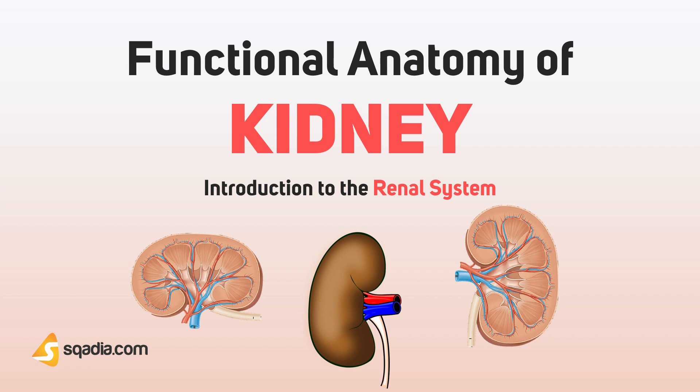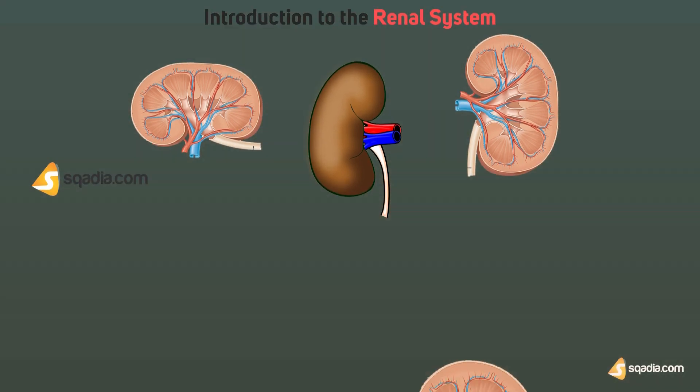Components of kidney are arranged in three layers. First is outer cortex. Second is the inner medulla. Third is renal sinus.